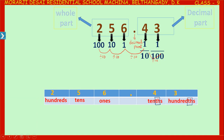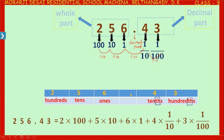When you write in expanded form, 256.43 can be written as two × 100 + five × 10 + six × 1 + four × one-tenth + three × one-hundredth. This is the expanded form of 256.43.